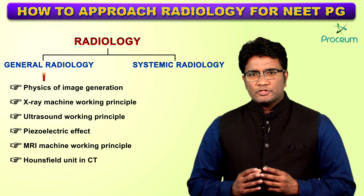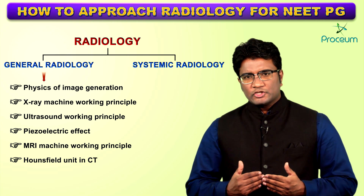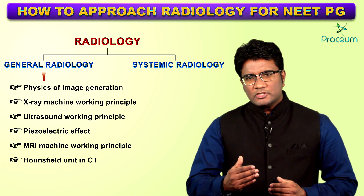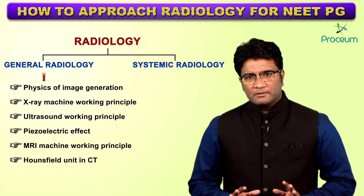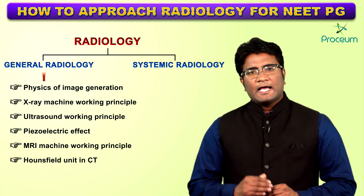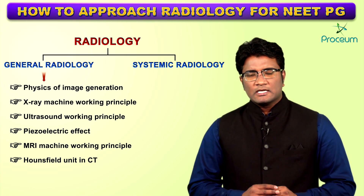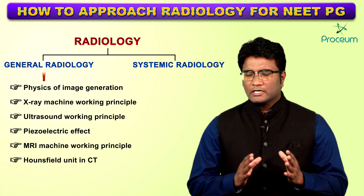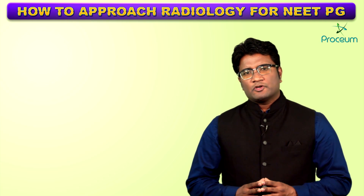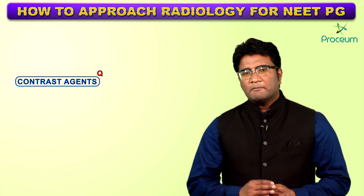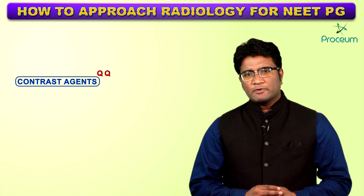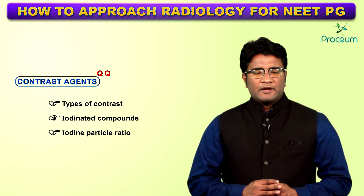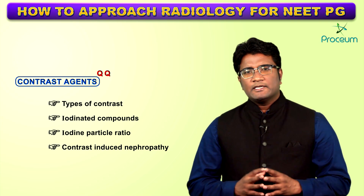Understand the basic terminology in general radiology: what is radiolucent, what is hypodense, what is hyperintense. Lot of this is related to physics and may seem a little difficult initially, but if you redo the same topic again you will be pretty comfortable and can make wise decisions for patient management. After understanding the diagnostic modalities — X-ray, ultrasound, CT scan, MRI — the next very important topic is contrast agents. Which contrast to use in which condition, what are iodinated compounds, what is the iodine-to-particle ratio, in which conditions they are contraindicated, and what is contrast-induced nephropathy — these are very high yield exam topics.